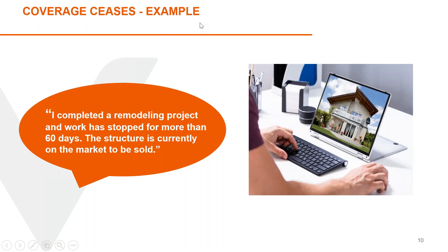About a third of what we do is remodeling. If you complete a remodeling project and the work has stopped but it hasn't sold yet, under our form on the remodeling side, if more than 60 days goes by without construction activity, coverage is reduced dramatically. This is not a program for vacant property — there are other products for that. We ensure ongoing construction projects, so that 60-day rule is how we protect ourselves.